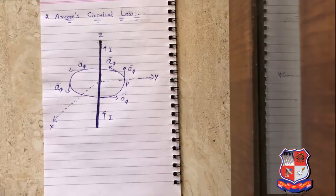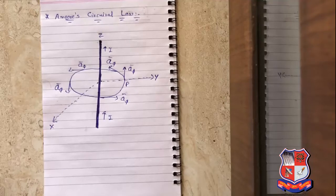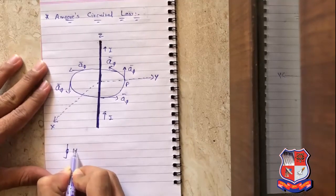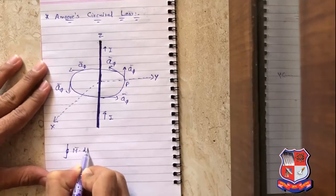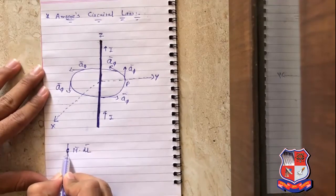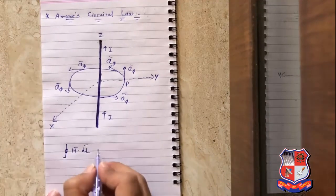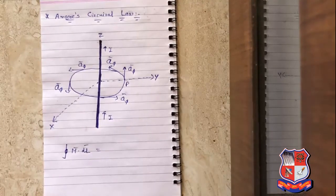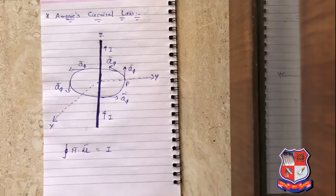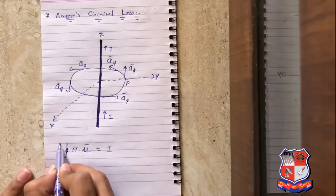The statement says that the line integral of magnetic field intensity H̅ is exactly equal to the direct current enclosed by that path, so it equals I. This is the mathematical expression of Ampere's Circuital Law.